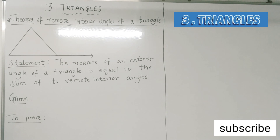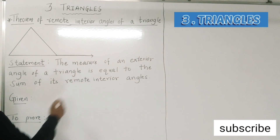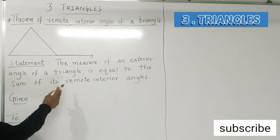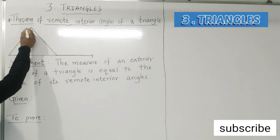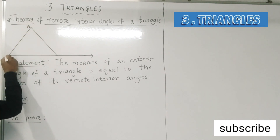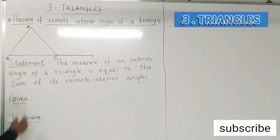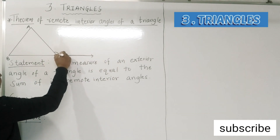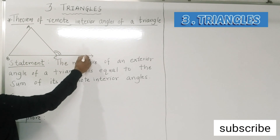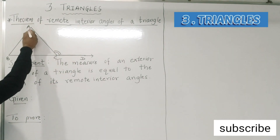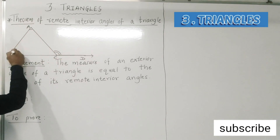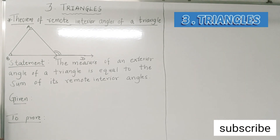The statement of the theorem is: the measure of an exterior angle of a triangle is equal to the sum of its remote interior angles. In the given triangle ABC, angle ACD is the exterior angle of the triangle, and this exterior angle is equal to the sum of the remote interior angles, which are angle A and angle B.